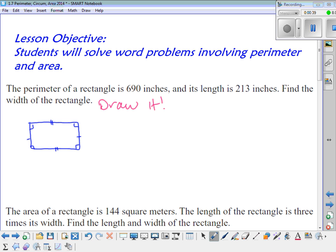So if the length is 213, that means it's 213 on the opposite side, and we'll use W for the width, because we don't know what that is. So the perimeter is 690 inches. Perimeter is determined by adding up all the sides.